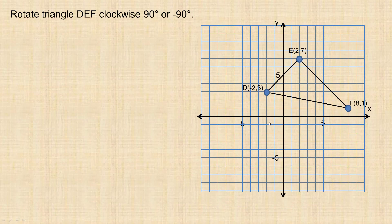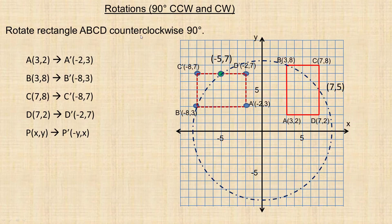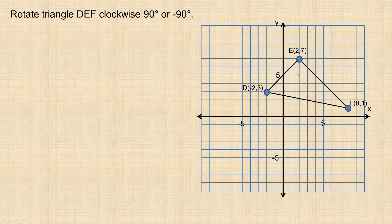In the second example, we're going to rotate a triangle instead of a rectangle. We're going to rotate it clockwise 90 degrees, also called a negative 90-degree rotation. Clockwise is referred to as a negative rotation — that convention is opposite to a clock — while counterclockwise is a positive rotation. So the counterclockwise example we just did could also be called a positive 90-degree rotation.